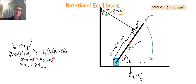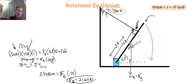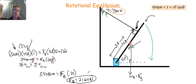So 540 newton-meters equals FB times 0.25. Dividing each side by 0.25, we get the weight of the boom equal to 2,160 newtons. If we wanted the mass, we could divide by the acceleration due to gravity, 9.8, to get the mass. This is how we solve a statics problem in rotational equilibrium using torques — find all the torques in the clockwise direction, all the torques in the counterclockwise direction, set them equal, and solve. I hope that helps, and I hope you have a great day.